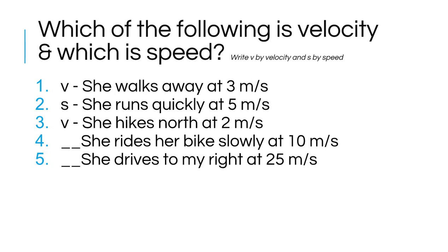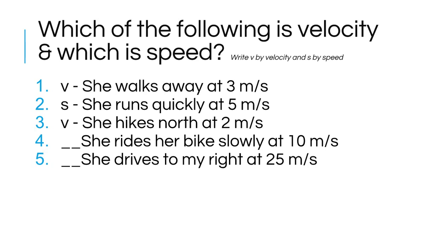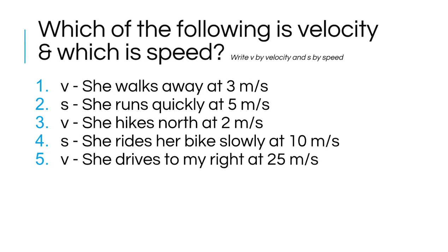She rides her bike slowly at 10 meters per second - slowly describes the speed, so there is no direction in that, and that means that is speed. She drives to my right at 25 meters per second - my right is her direction and 25 meters per second would be her speed, which is velocity. How'd you do? Does this make sense? If it doesn't, you should maybe talk to me about this.